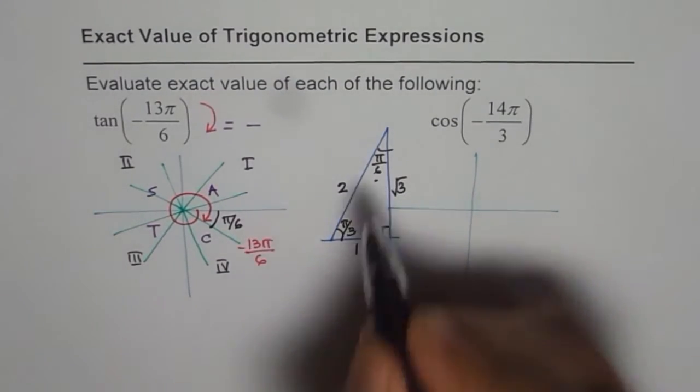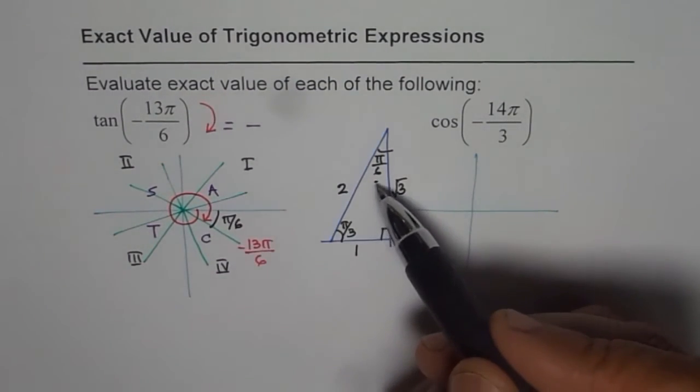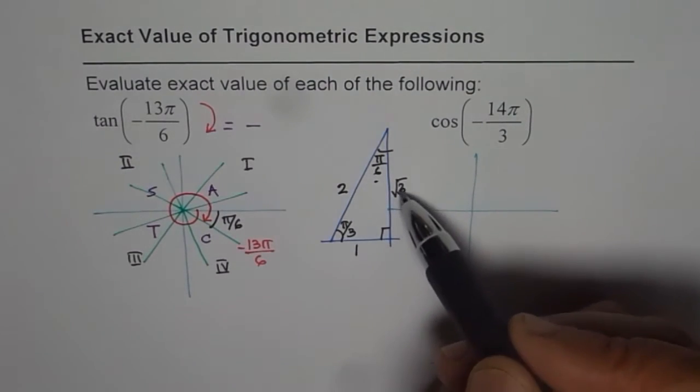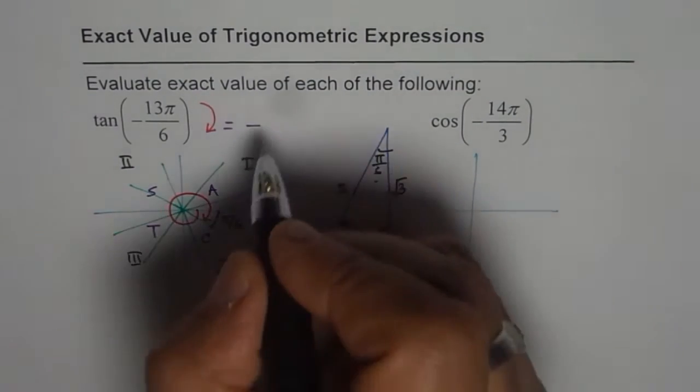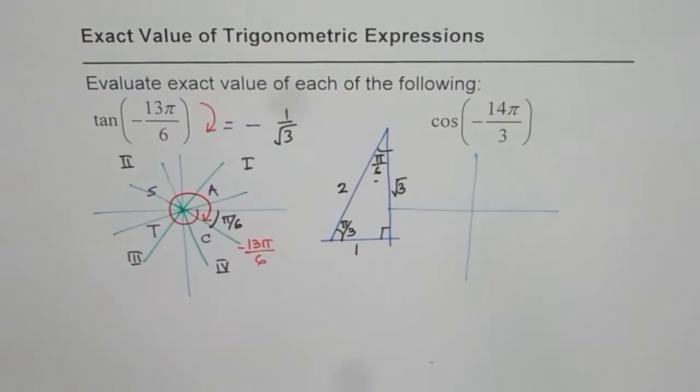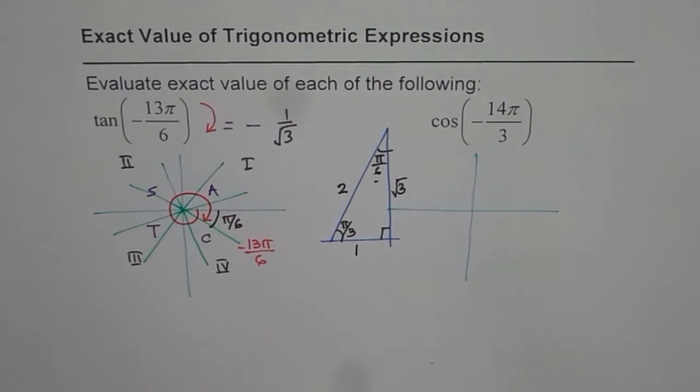So we are looking for π by 6, that angle. Tan value is opposite over adjacent, that means 1 over square root 3. So that is the value of tan minus 13π by 6. I hope you got it.